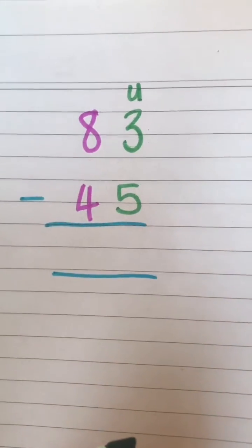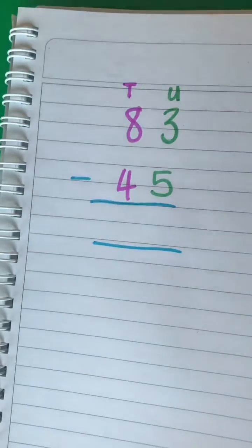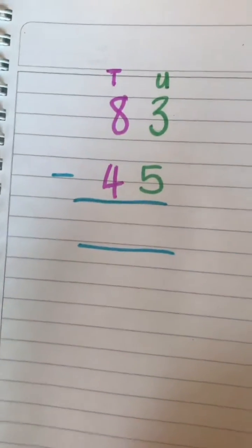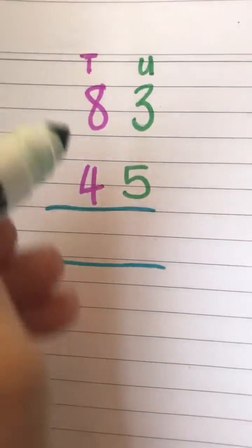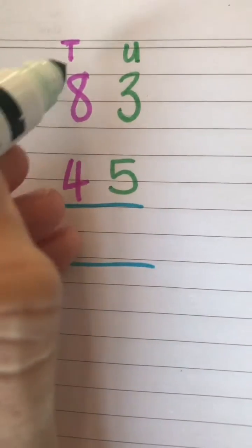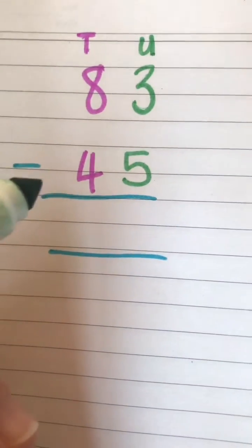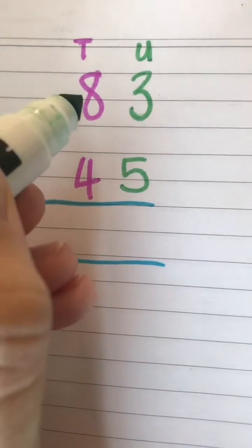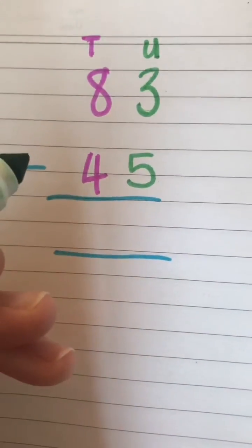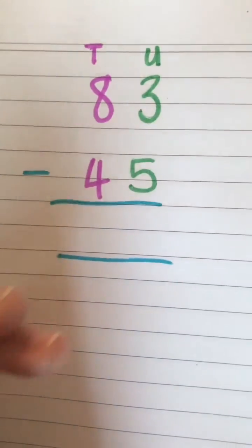we borrow from the tens column. Okay, so because my units column doesn't have enough, I'm going to borrow from my tens column. So what I do is, from this 8—which actually stands for 80—I'm going to take away 10 and give it to the units column. So if I take away 10 from 80, it gives us 70. So I'm going to cross out this 8 because it's not 80 anymore. It's now